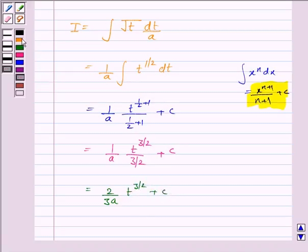Let us now substitute the value of t here. So this becomes 2 by 3a, ax plus b to the power 3 by 2 plus c.